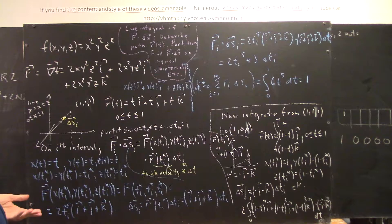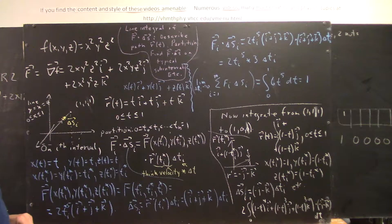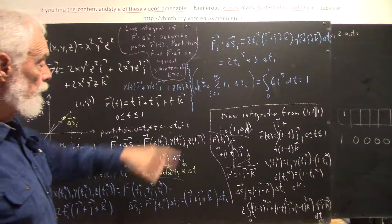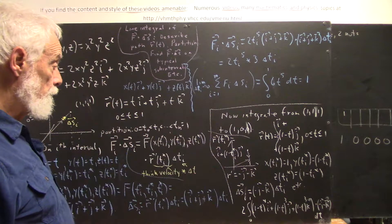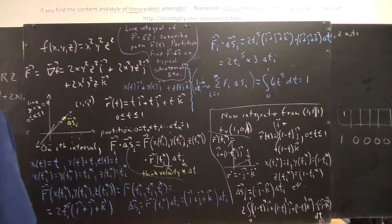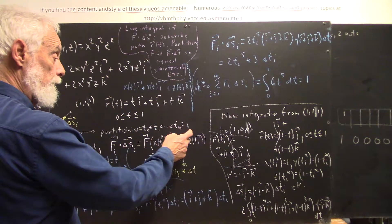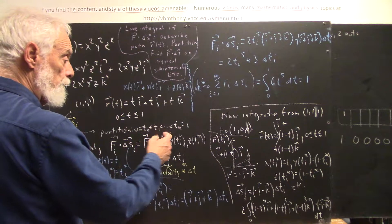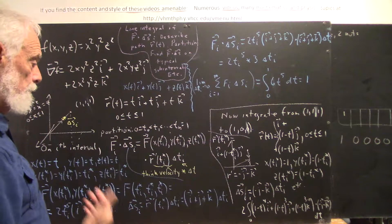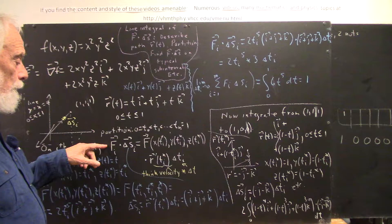As t goes from 0 to 1, the tip of this vector — with its initial point at the origin — traces out this curve, this path, this line segment in this case. So what do we partition? We've described our path R(t). We want to partition our variable. t is our one variable, t goes from 0 to 1, so we're going to partition the interval from t = 0 to t = 1.